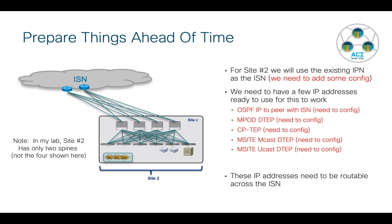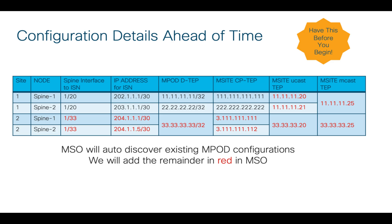Looking at site number two by itself - because this is a brand new site that's never been configured before, we need to do all the configuration related to the multi-site aspect. The first thing is setting up OSPF peering between the spines and the ISN. We need to add the TEP addresses related to multipod for completeness, and of course all of the multi-site specific TEPs as well. I strongly recommend putting together your own cheat sheet with all addresses and interfaces laid out ahead of time.